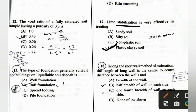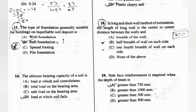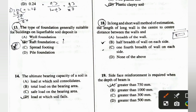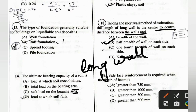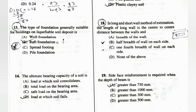In the long and short wall method of estimation, the length of the long wall is the center-to-center distance plus half the breadth of the wall on each side. Option B is the correct answer: center-to-center length plus half breadth on each side.